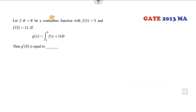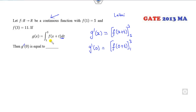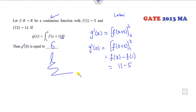For a continuous function f where g(x) = ∫₁³ (x+t)·f(t) dt, find g'(0). By the Leibniz rule, differentiate inside the integral: g'(x) = ∫₁³ f(t) dt. At x=0: g'(0) = ∫₁³ f(t) dt = f(3) - f(1) [by fundamental theorem, but here it means evaluating with given values]. f(3)=11, f(1)=5, so g'(0) = 11-5 = 6.